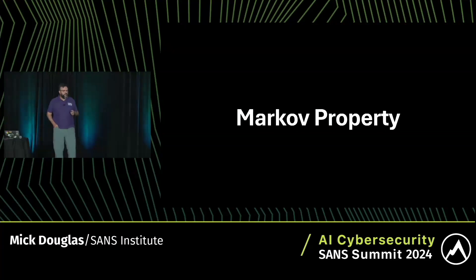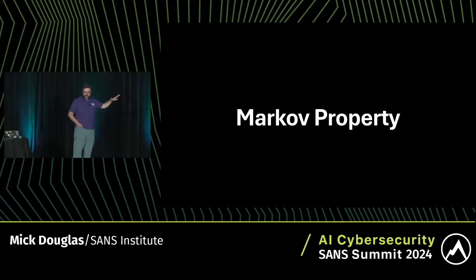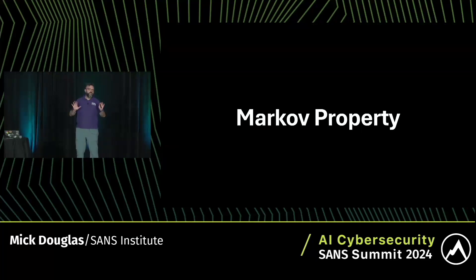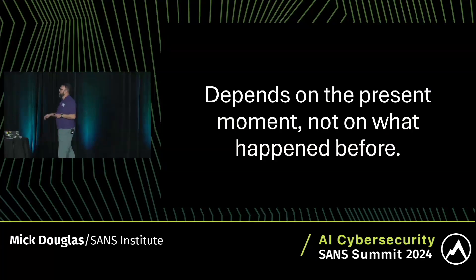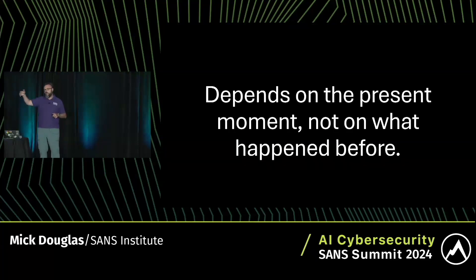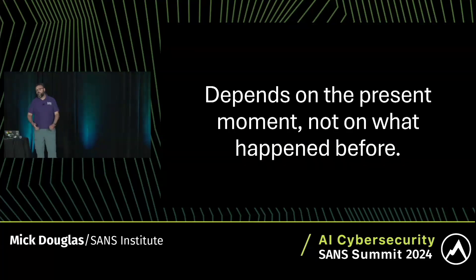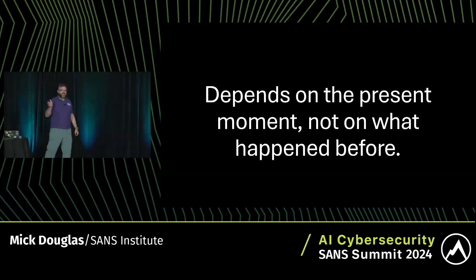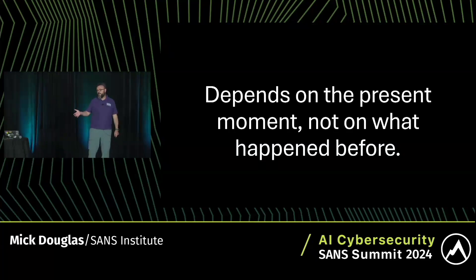If you read the papers about Markov chains, there's a thing called the Markov property. Vastly simplified: a Markov model is dependent on the present moment — what's happening right now — not what happened before. There's a lot of attack behaviors that actually do well in time series analysis. That's not a Markov problem.